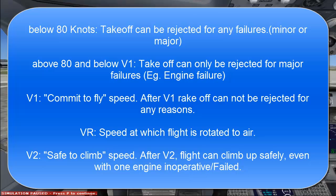Next comes VR speed. VR, or V-rotate speed, is the speed at which you pull back the stick and rotate the aircraft to climb. And next comes V2 speed. V2 is the safe speed to climb — that is, at V2 speed, even if an engine failure occurs, the aircraft can still climb up easily.